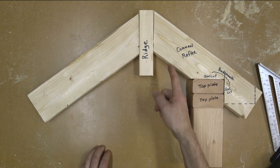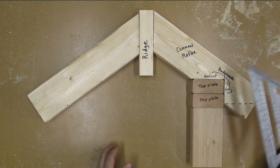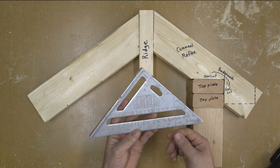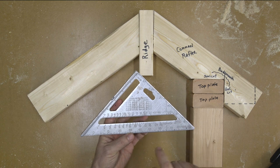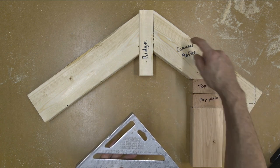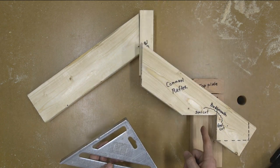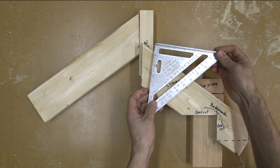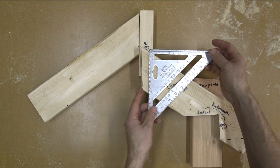So in order to find this angle and to make this cut, we have to use a different part of the speed square. We're going to accomplish that by using the pivot, which we already discussed, and instead of using the bottom degrees, we're going to use the next line up which is labeled "common." This is a common rafter. So in order to get the ridge cut up here and the heel cut of the bird's mouth, we're actually going to use the same technique we did with using it as a protractor.